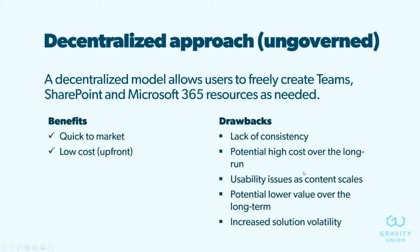Usability issues also arise — for example with search — as content scales. There's lower value over the long term because people can't find things, and compliance rules are harder to build in when the foundation isn't consistent. The last drawback is increased solution volatility: ungoverned solutions can require more changes over time, creating more churn as departments spend time fixing rather than improving.